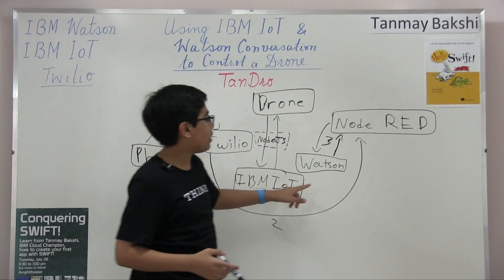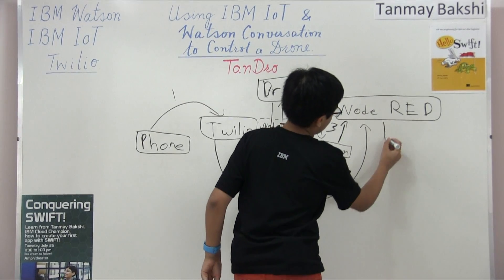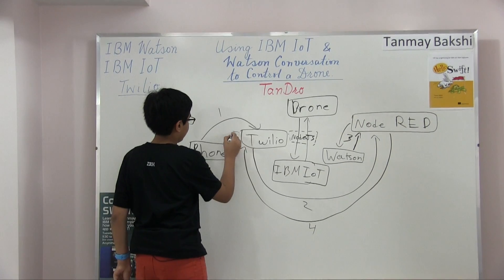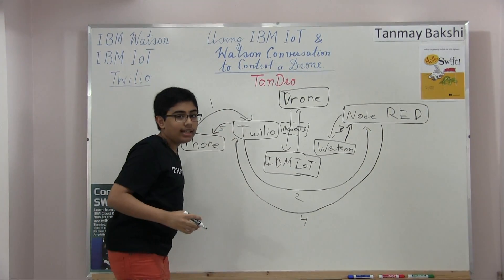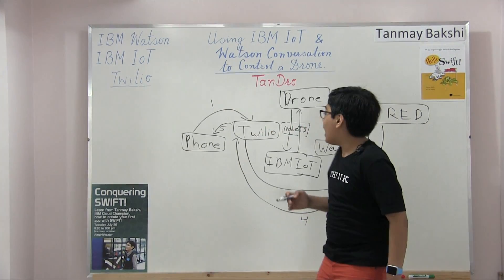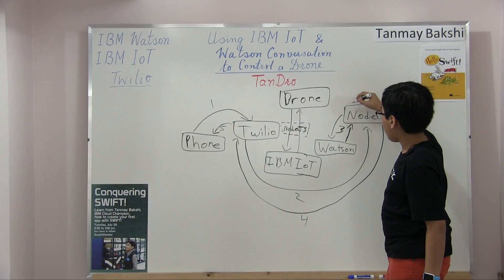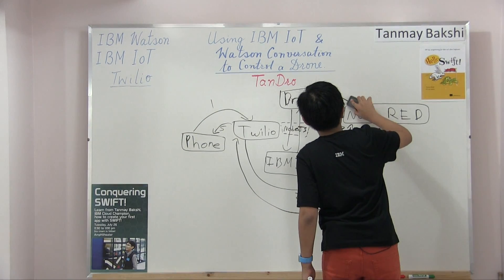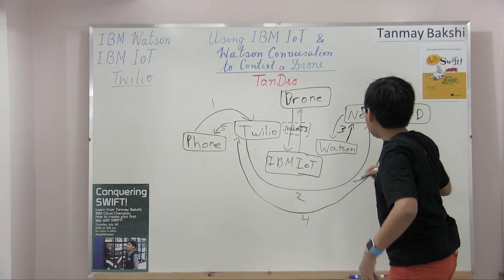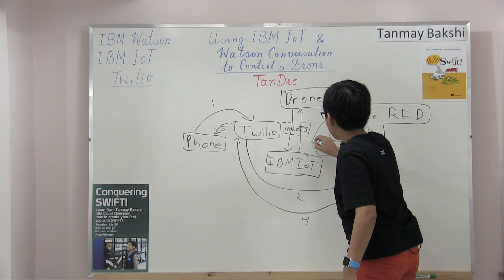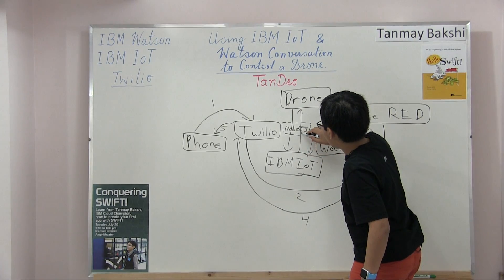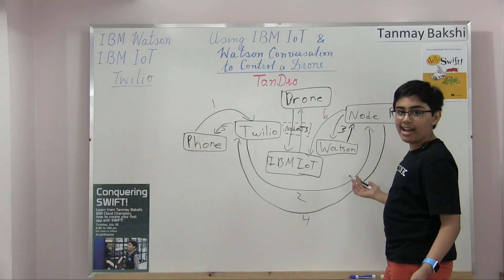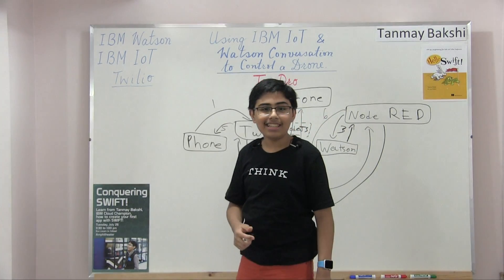Once Watson gives the result back to Node Red, Node Red sends a message back to Twilio — that's the fourth step — and Twilio sends it back to your phone, which is the fifth step. To control the drone, once Node Red knows the intent — whether to take off or land — it sends that intent to IBM IoT, which is the sixth step. IBM IoT then sends it through Node.js code to the drone, creating a neat system to control a drone using your phone.